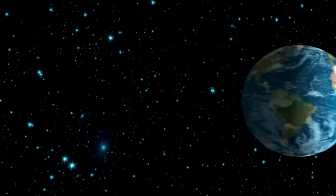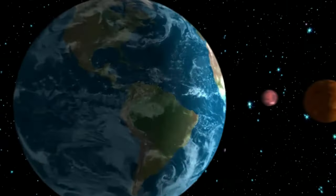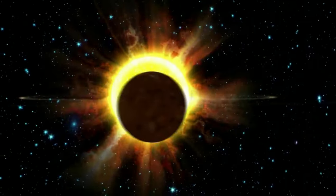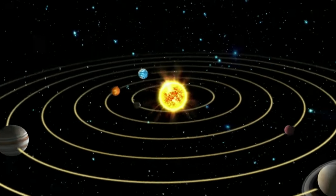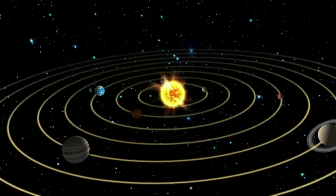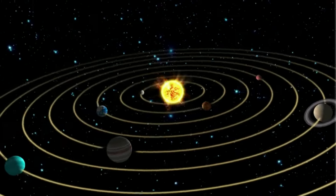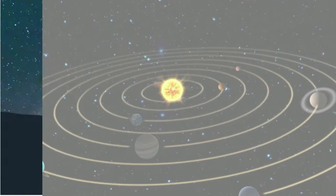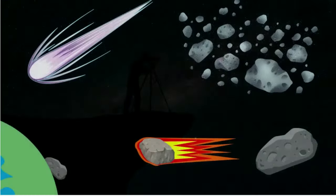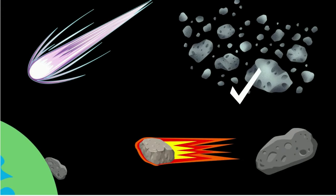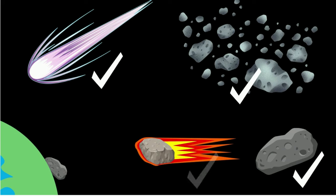It is a combination of falling towards the Sun due to gravity, but never reaching it due to the forward motion of inertia. In this video, let's learn the difference between an asteroid, comet, meteoroid, meteor, and meteorite.